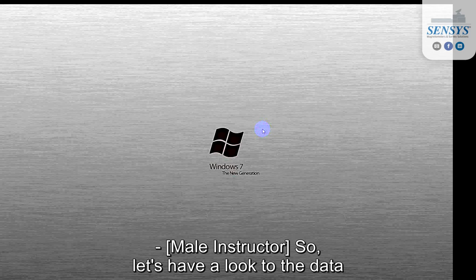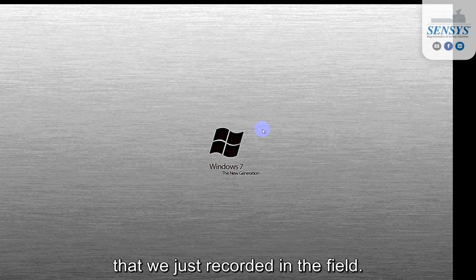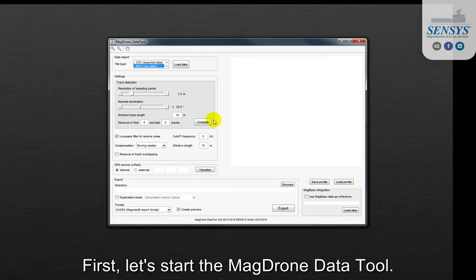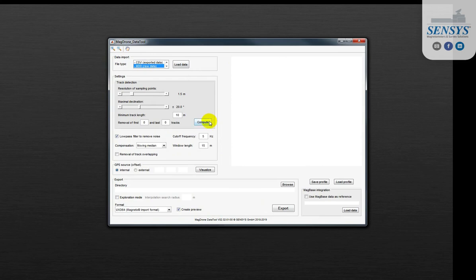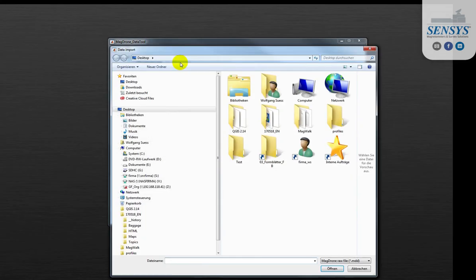So let's have a look at the data that we just recorded in the field. First let's start the MacDrone data tool. We're going to import the data from the directory.